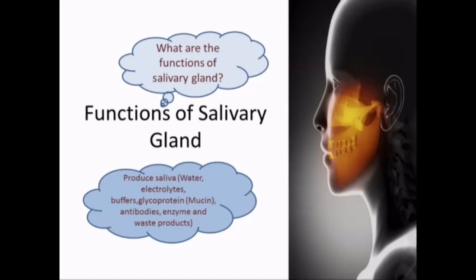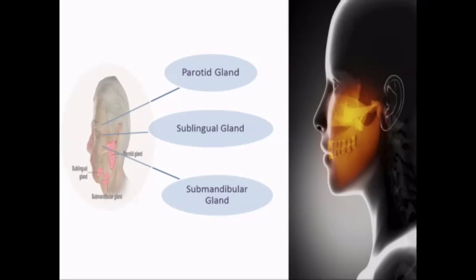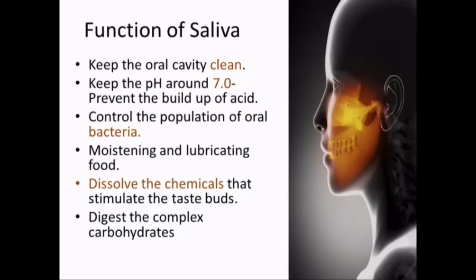Now let's move to the function of the salivary gland. Salivary glands produce saliva, which is mainly made out of water, electrolytes, buffers, glycoproteins, antibodies, enzymes, and waste products. There are three main glands: the parotid gland, sublingual gland, and submandibular gland. Saliva keeps the oral cavity clean and maintains the pH around 7.0 to prevent the build-up of acid produced by bacteria. By controlling the pH, we can control the population of oral bacteria. Saliva can also moisten and lubricate food, dissolve chemicals that stimulate the taste receptors, and digest complex carbohydrates.